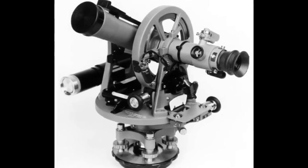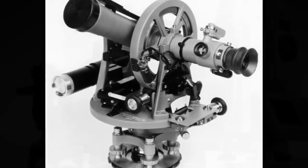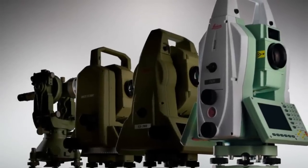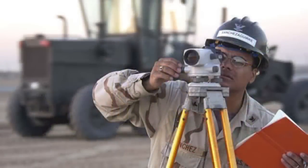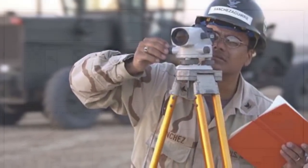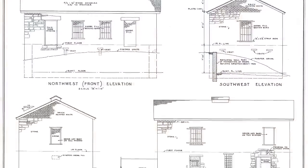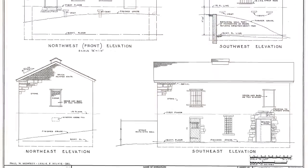Since then, intermediary developments like theodolites and electronic distance meters have allowed this process to become faster and more accurate, but we were still collecting individual points that had to be brought together manually and interpreted as a drawing.